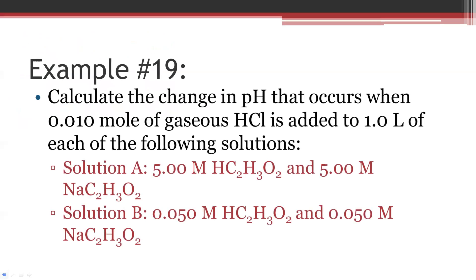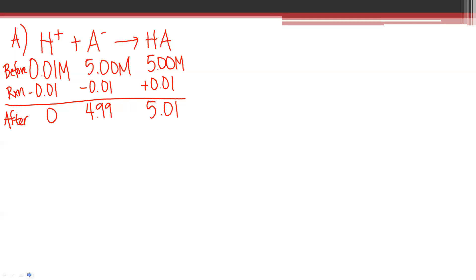The Ka for acetic acid wasn't given with this problem, but if you look back at Example 16, the Ka is 1.8 × 10⁻⁵. We need that for the equation — it's something I forgot to include since we've been using this acid a lot in our examples. Now let's figure out the pH of our solution.